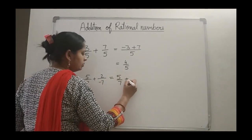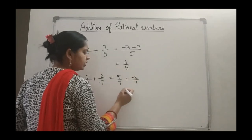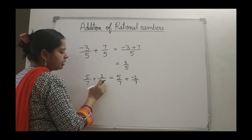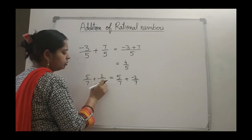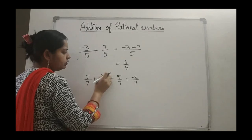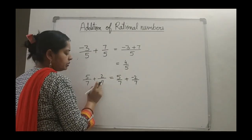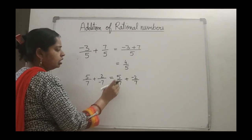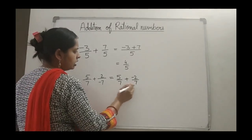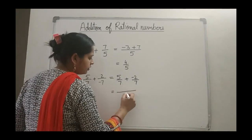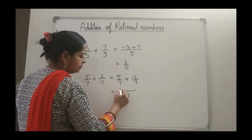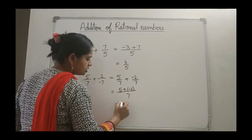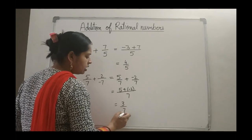This minus will come in the numerator, so minus 2 upon 7. If we multiply 2 upon minus 7 by minus 1 in the numerator and the denominator: 2 into minus 1 gives minus 2, and minus 7 into minus 1 gives 7. So we have transformed the negative sign into the numerator. Now we have the common denominator 7. So 5 plus minus 2 is 3. The answer is 3 upon 7.